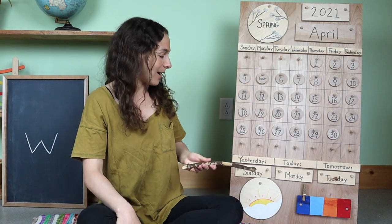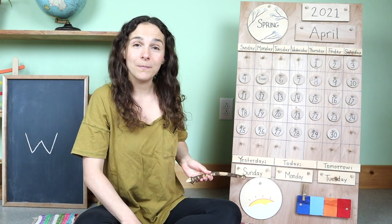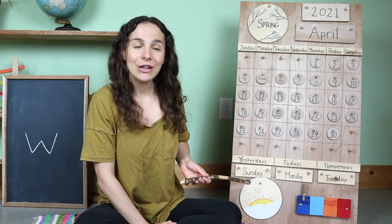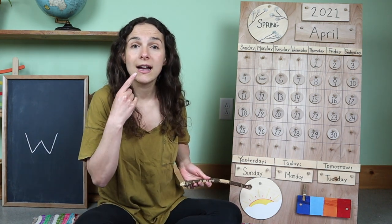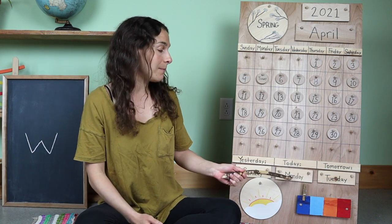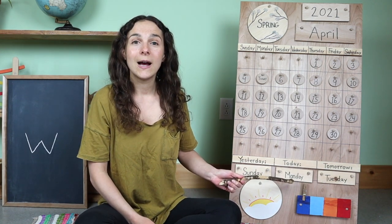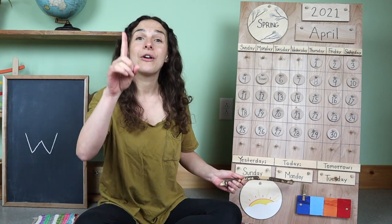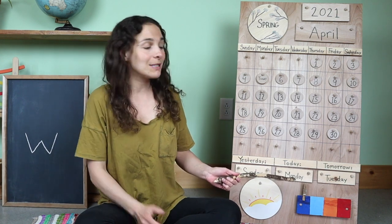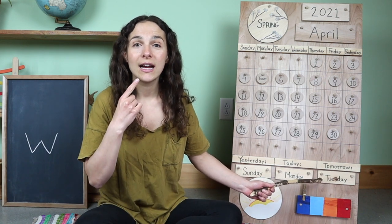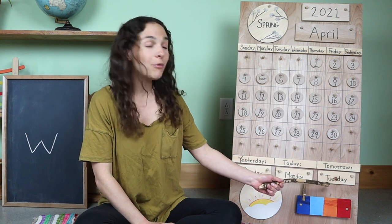Let's travel back down to the bottom of the chart, right down here. Do you remember what the day was yesterday? Here's your clue. Yesterday was Sunday, the last day of the weekend. So that means that today is Monday. Today is Monday — the first day of the weekday. And if today is Monday, that means that tomorrow will be Tuesday.